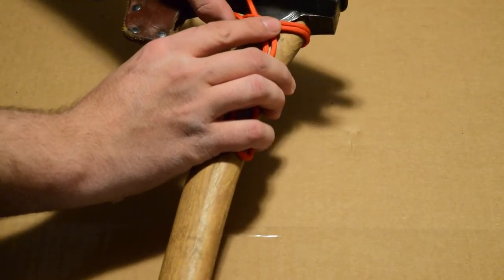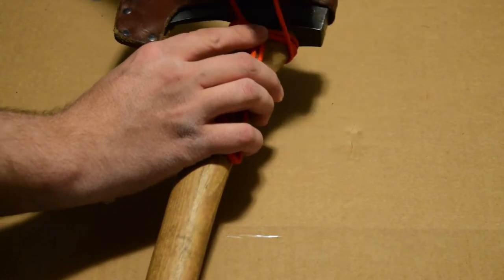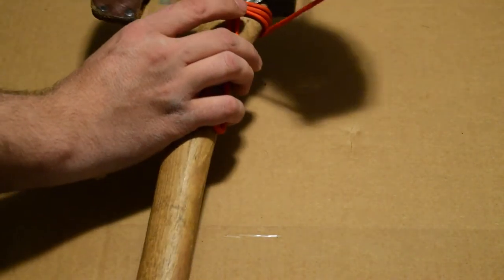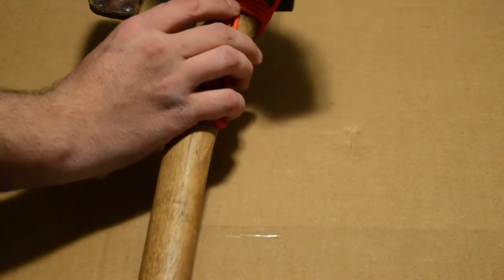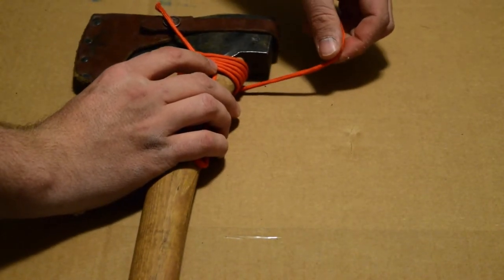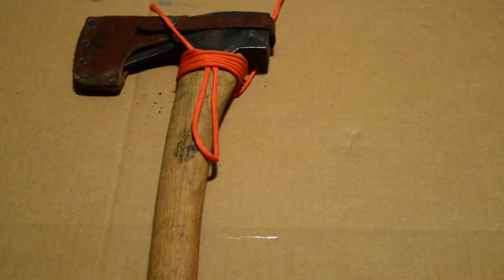You just want it nice and snug so nothing gets loose. And then you want to constantly keep bringing your lines up and pushing your lines together. You don't want to ever overlap during a pass. You just want to kind of make that nice and simple and just keep going down. And I will go ahead and speed this up until I get to the very end of my loop.